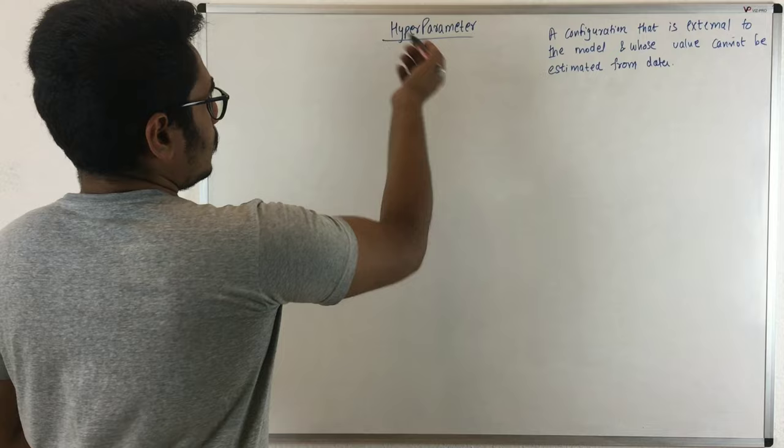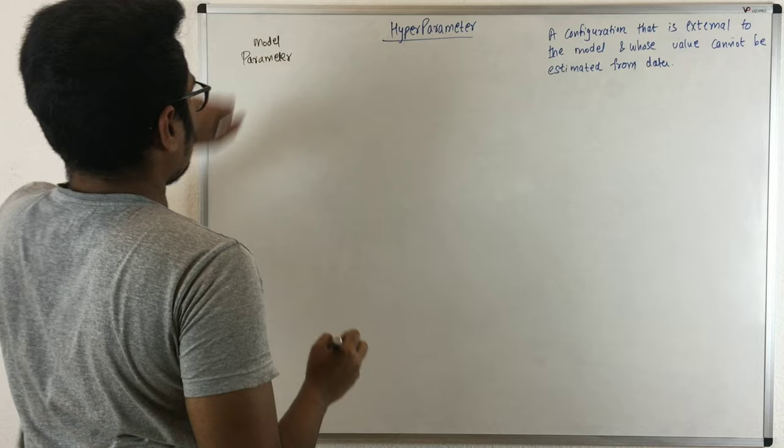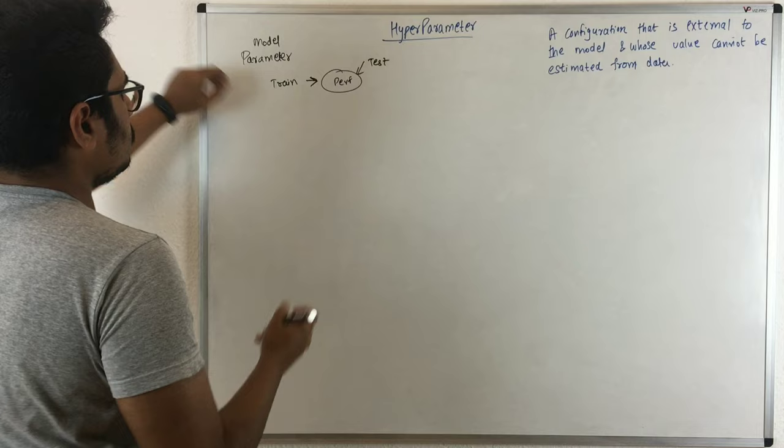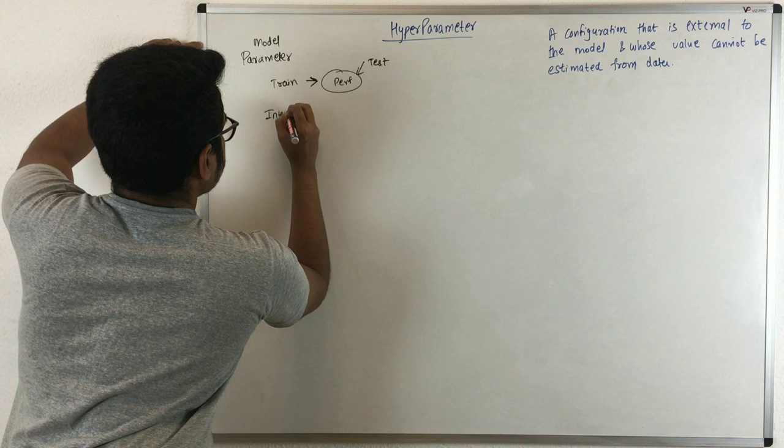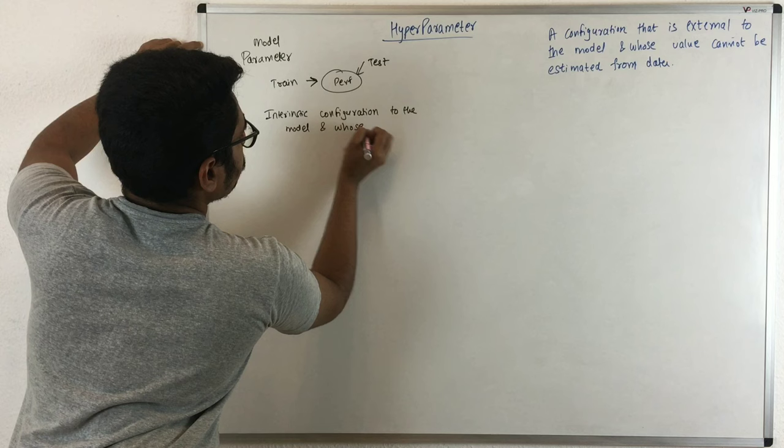Before starting with the hyperparameter, let us consider the term parameter. In machine learning, you create a model from your training data and evaluate its performance on test data. The model parameter is an intrinsic configuration to the model whose value is defined by the data.